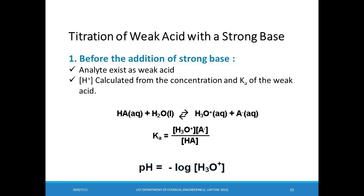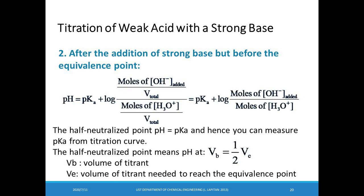The initial pH is that of the weak acid in water, calculated from the Ka expression. During the pre-equivalence point region, some weak acid is converted to its conjugate base, creating a buffer. We use the Henderson-Hasselbalch equation to calculate pH. When the weak acid concentration equals the conjugate base concentration, pH = pKa — this is the half-neutralization point, occurring at half the volume needed to reach the equivalence point.